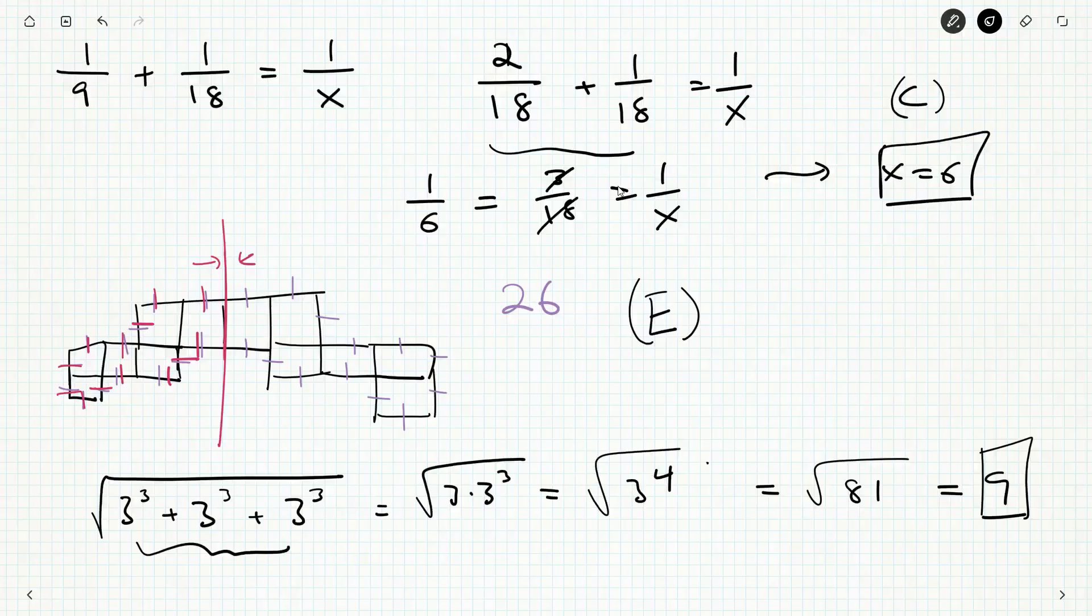And you can either say, well, three to the four is 81, or you can say, well, the square root symbol divides the exponent by two, so we get three squared, which again is just nine.